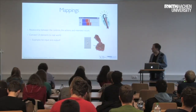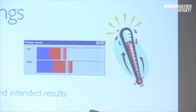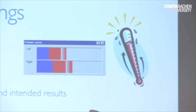Mappings also work in the input direction, and that might be a little less obvious. A thermometer, for example, takes a real-world measurement — temperature — and maps that to a way of displaying it. In a classic thermometer, the liquid goes up as the temperature increases. Similarly, a simple two-channel volume meter displays left volume on one side and right volume on the other, and as volume on each channel goes up, the bar moves to the right and may enter different color zones.